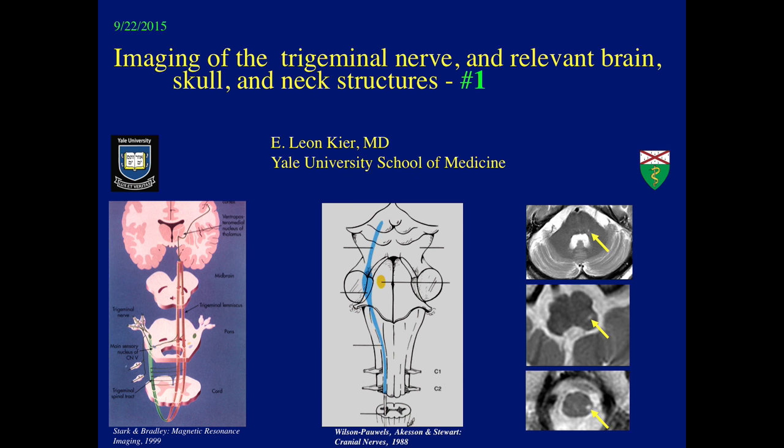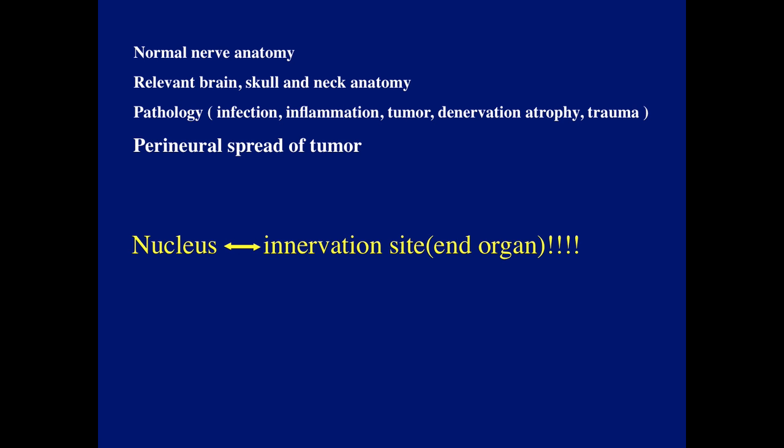Hello everyone. I hope that the fellows and residents watching this talk are signed in to the Yale Connect web link so that I can acknowledge their answers to my questions. Today I'm going to start my series of talks on cranial nerves. For each nerve I'll go through the normal nerve anatomy, the relevant brain, skull and neck anatomy, pathology — which includes infection, inflammation, tumor, denervation, atrophy, and trauma — and also focus heavily on perineural spread. It's very important in studying the cranial nerves that attention is paid to the course of the nerve all the way from the nucleus to the end organ, the innervation site.